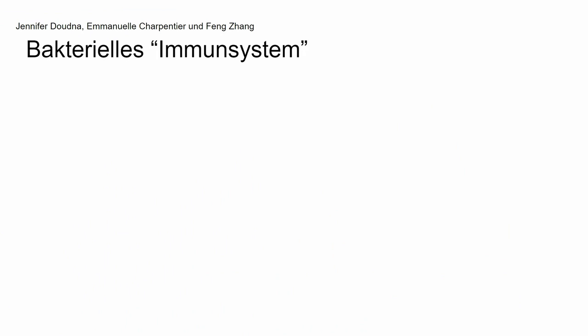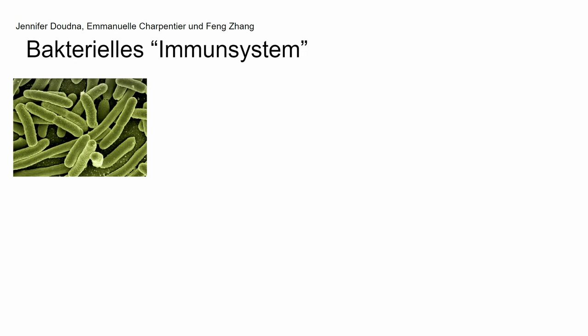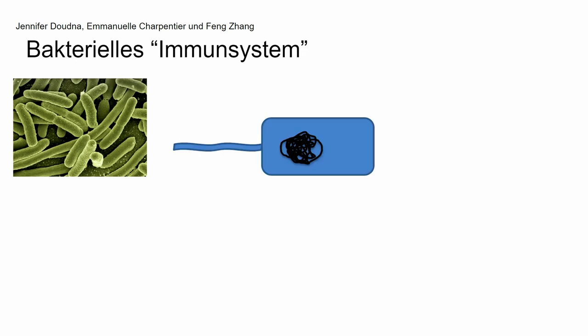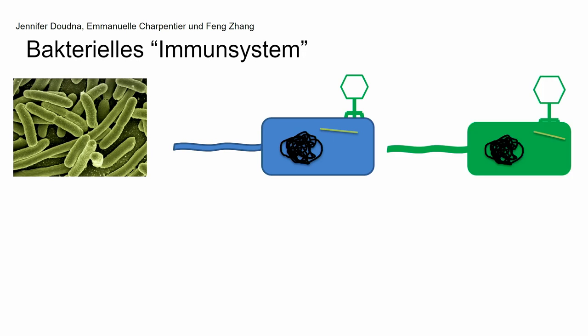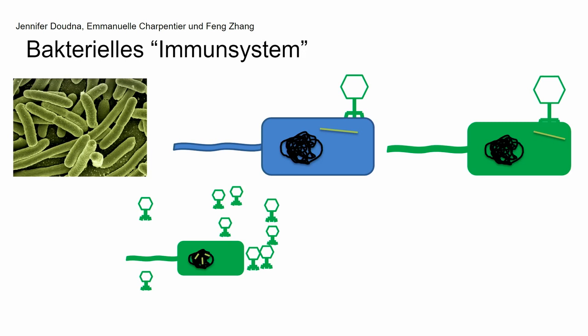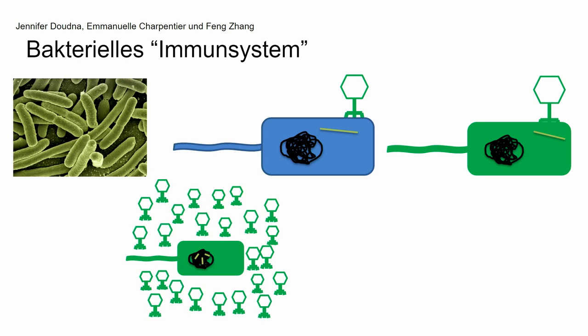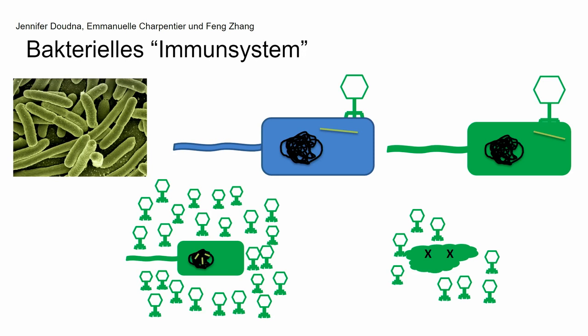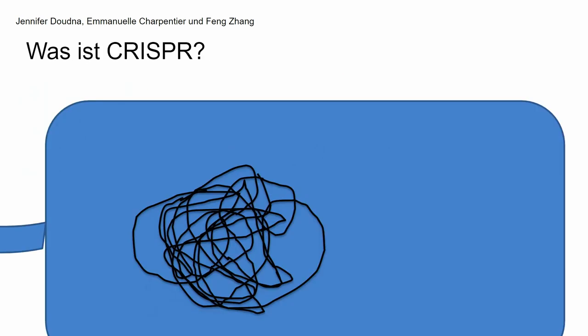What exactly is CRISPR? CRISPR is part of the bacterial immune system. The E. coli bacteria, typically found in human intestines, can themselves be infected by viruses. The virus attacks and dumps its own genes inside, which infects the bacteria, which in turn produces more viruses. This ultimately kills the bacterium and produces more viruses, which can infect further bacterial cells.